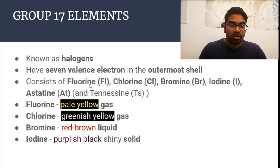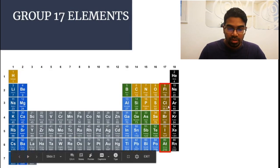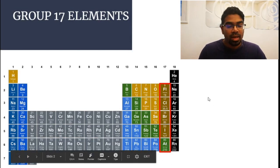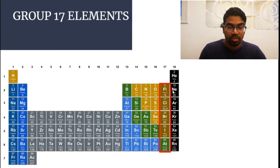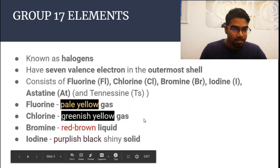They consist of fluorine, chlorine, bromine, iodine, astatine, and tennessine. As you can see in the periodic table, fluorine, chlorine, bromine, iodine, astatine, and tennessine are listed down the group. Tennessine is a synthetic element and behaves differently from the rest, so we're only going to be looking from fluorine until astatine.